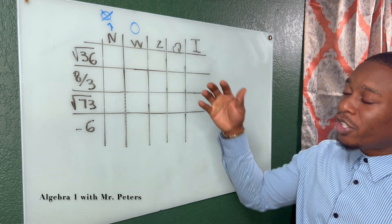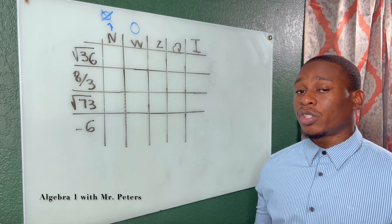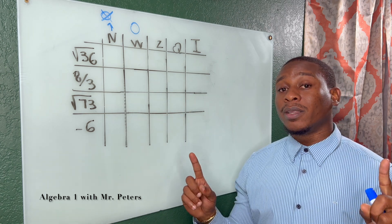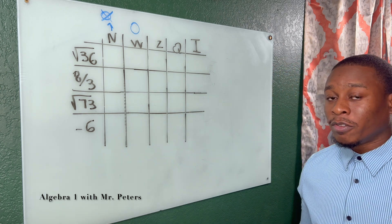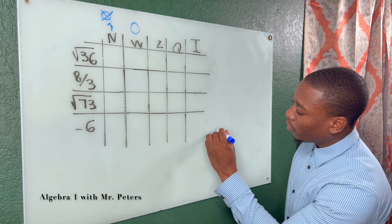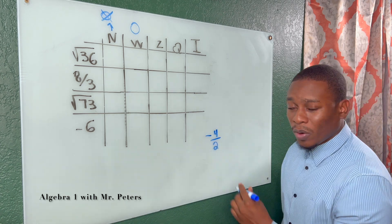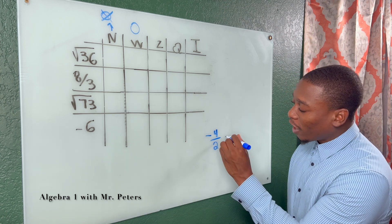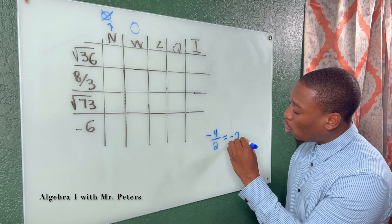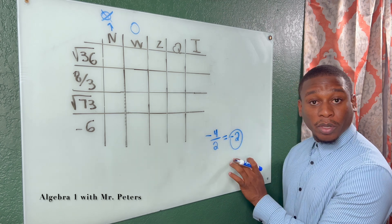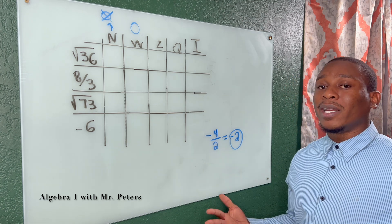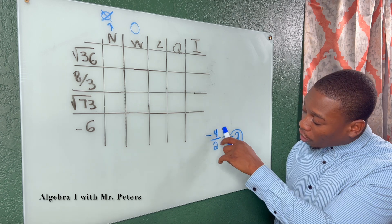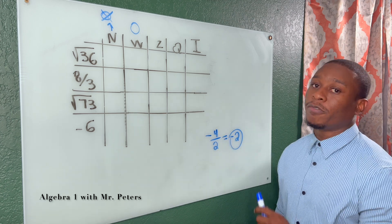Integers are the same as natural and whole numbers — they're whole numbers — but they can be positive and negative. The trick with integers is they might give you a fraction. If you don't simplify it to get a whole number, such as negative 2, you'll think it's not an integer. But integers can be fractions only if they simplify to a whole number.